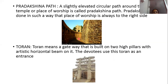The next part is Torana. Torana means the entrance of the Stupa. It is a gateway built on two high pillars with a horizontal beam. The devotees use this Torana as an entrance to the Stupa.